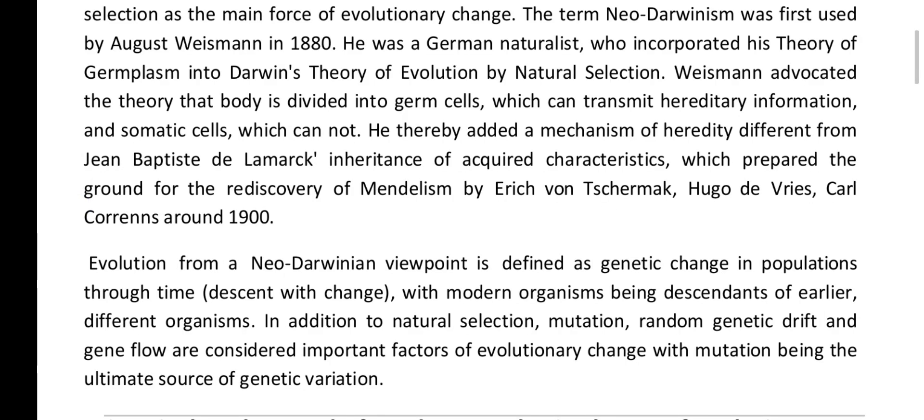Evolution from a New Darwinian viewpoint is defined as genetic change in populations through time, i.e. descent with change, with modern organisms being descendants of earlier, different organisms. In addition to natural selection, mutation, random genetic drift, and gene flow are considered important factors of evolutionary change, with mutation being the ultimate source of genetic variation.